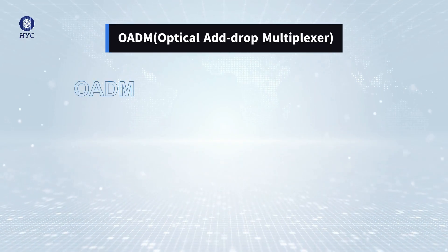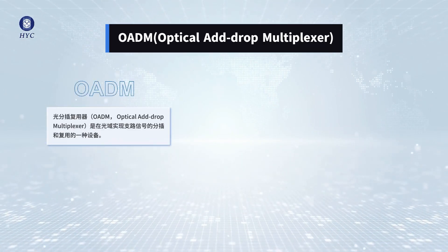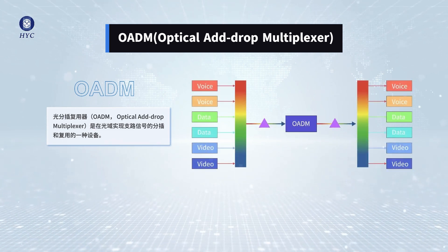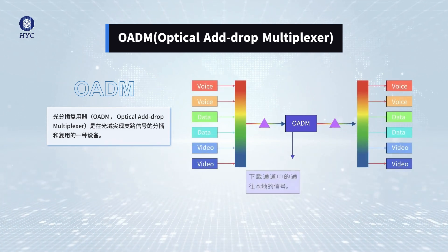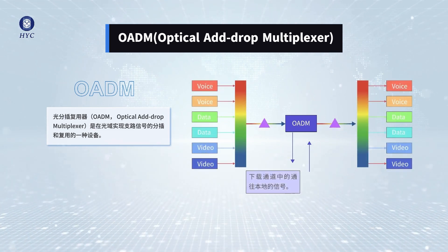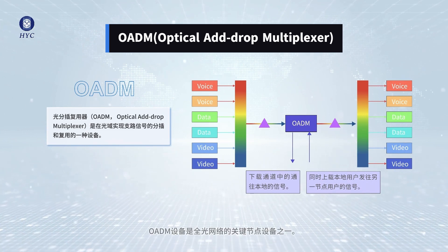The main function of OADM is to selectively add or drop one or more wavelength channels without affecting the transmission of other wavelength channels.